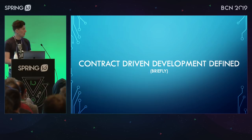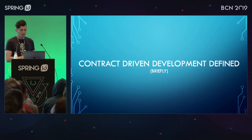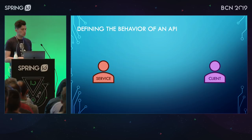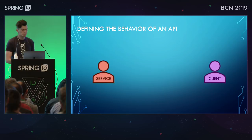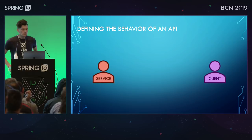Let's briefly cover at a very high level what contract-driven development is. The point of contract-driven development is to define the behavior of an API. A client is going to send a call to a service — a request going to some endpoint with a body, perhaps if it's a POST, and headers. Based upon that request, the service should respond in a certain way, maybe a 200 response. Contract-driven development is when you actually write this down in some sort of contract that can be programmed and tested against.